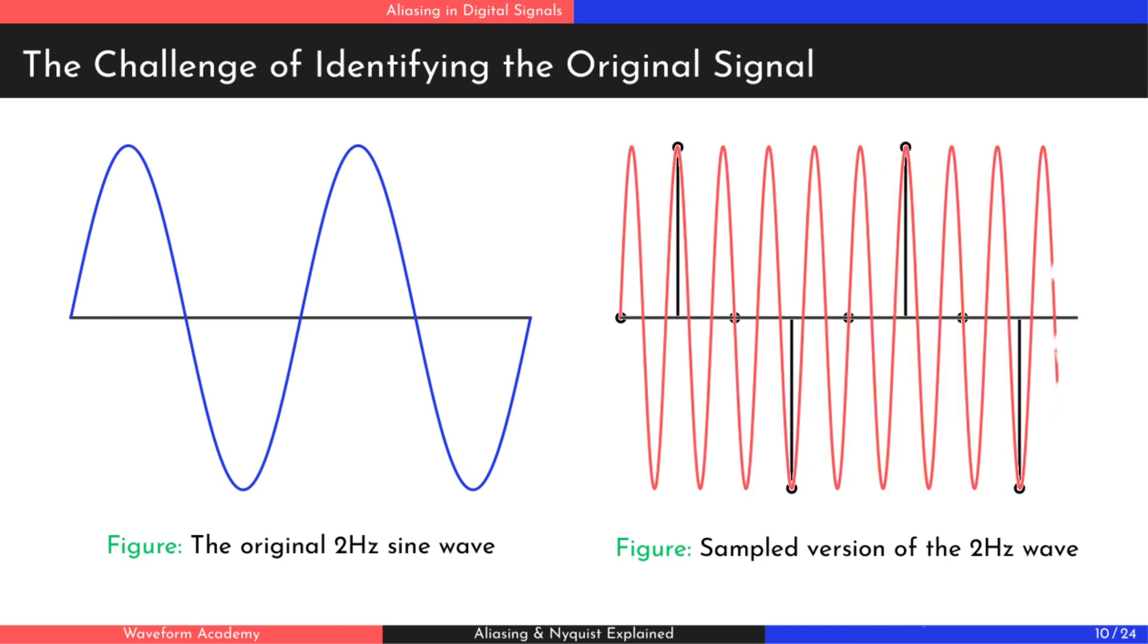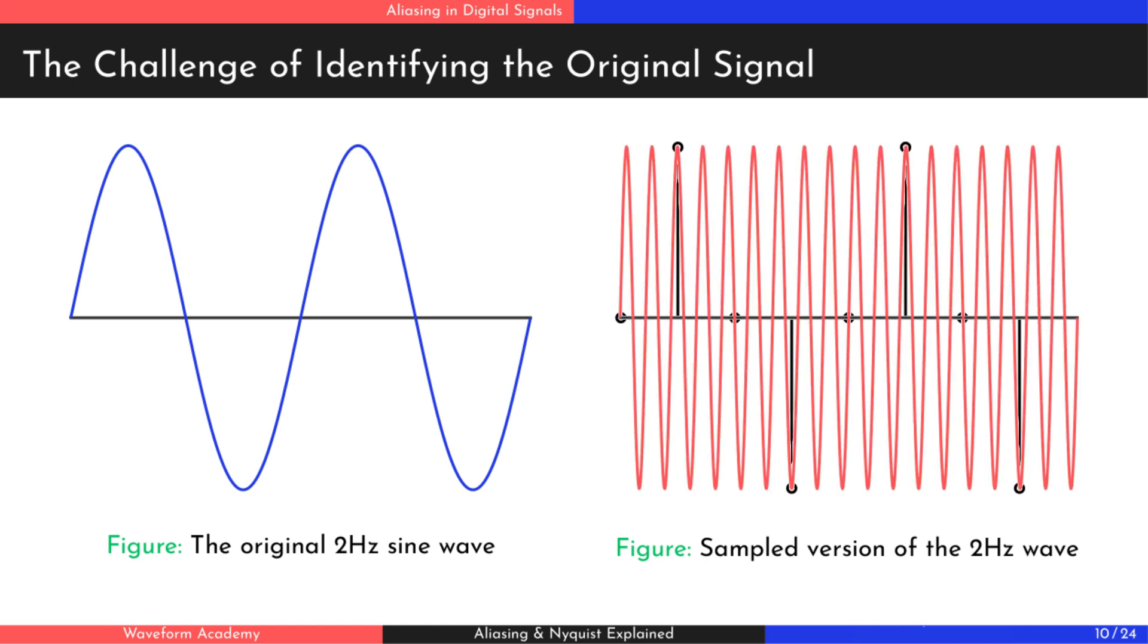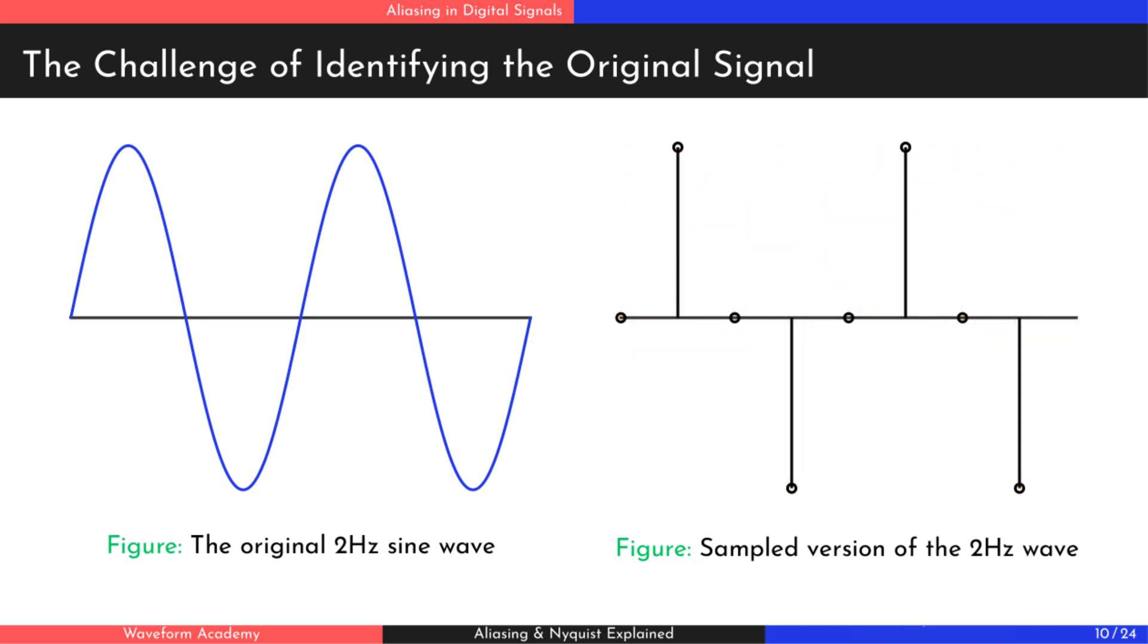So would an 18 Hz wave and infinitely many others. This means that from the samples alone, we cannot uniquely identify the original signal. The key assumption we make is that the original signal must be the one with the lowest possible frequency that fits the samples. This allows us to reconstruct it correctly.